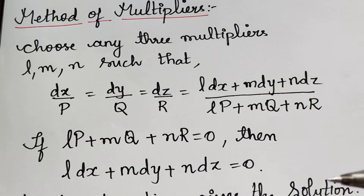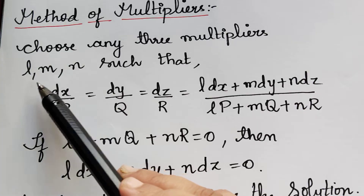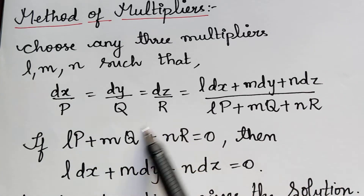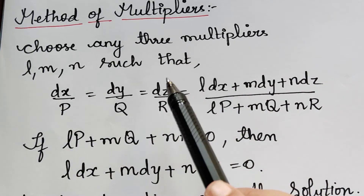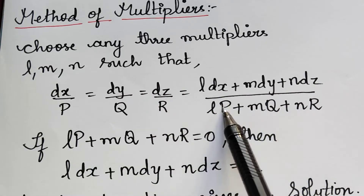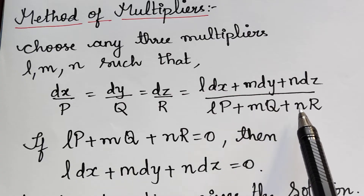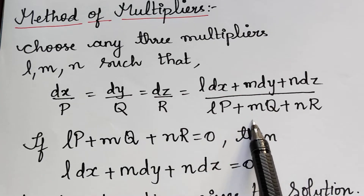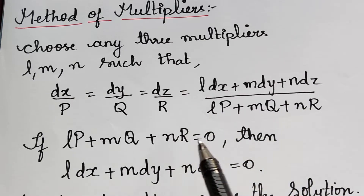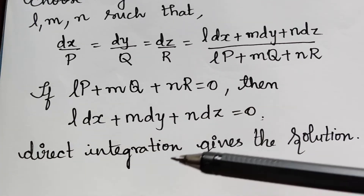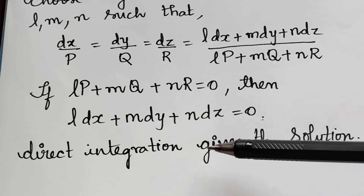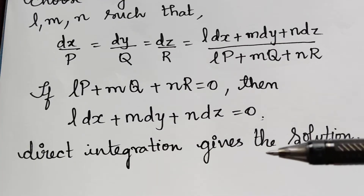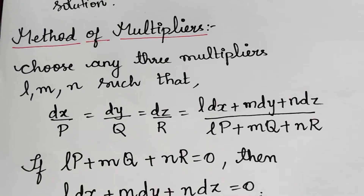The method of multipliers requires choosing three arbitrary multipliers L, M and N such that when we multiply L with the first equation, M with the second, and N with the third, and add them, the numerators and denominators combine. When the denominator becomes zero, the numerator can also be equated to zero, and by direct integration we obtain a solution. In a similar manner, we choose other multipliers to find the second solution. This will be easier to understand when we solve problems.